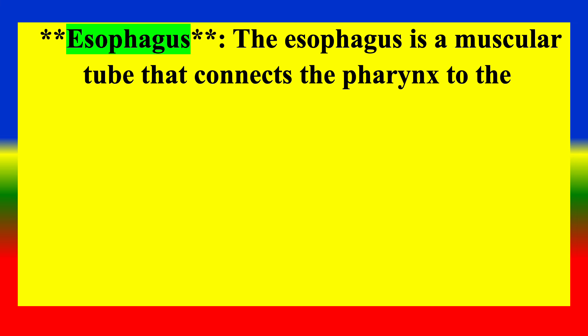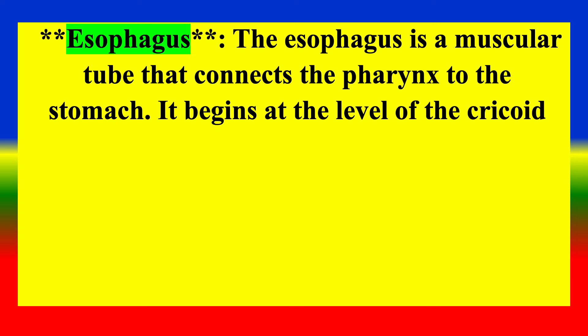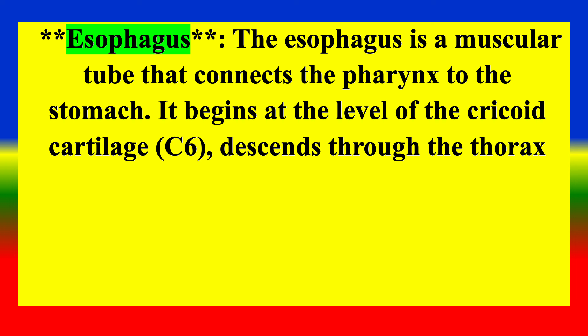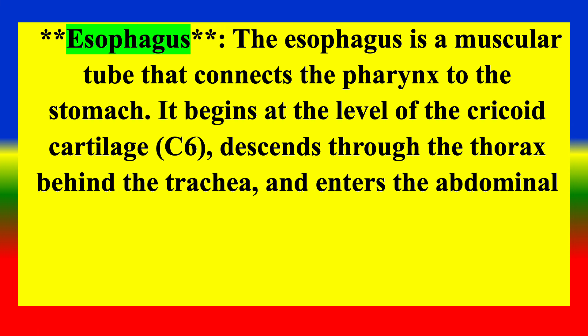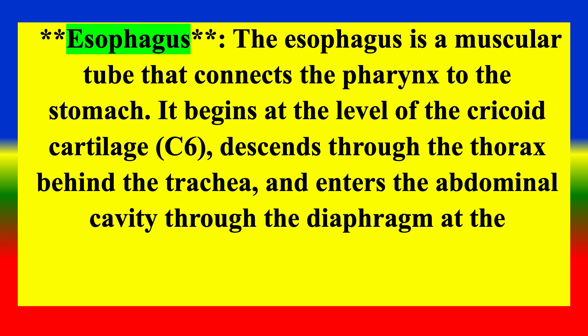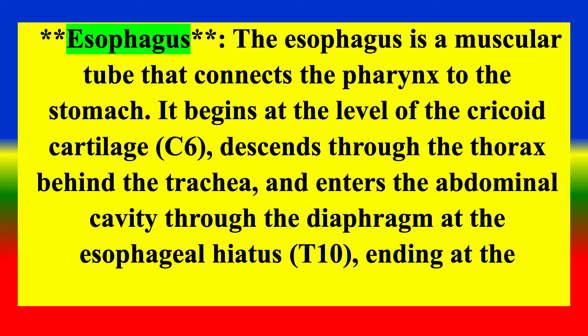Esophagus: It is a muscular tube that connects the pharynx to the stomach. It begins at the level of the cricoid cartilage (C6), descends through the thorax behind the trachea, and enters the abdominal cavity through the diaphragm at the esophagus at T10, ending at the stomach at T11.